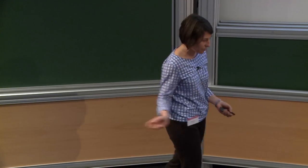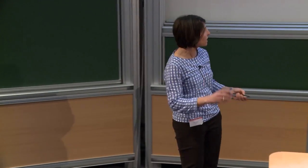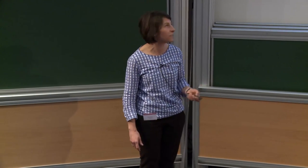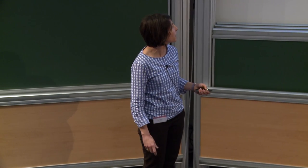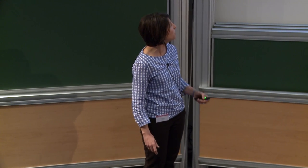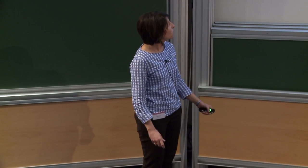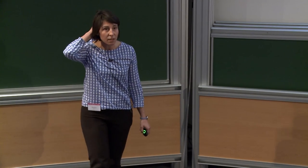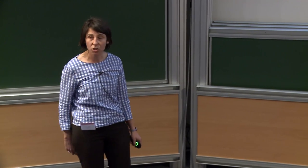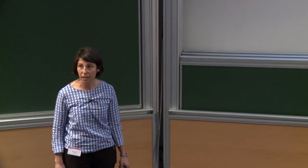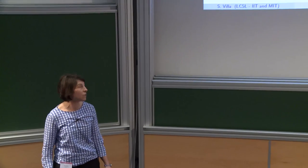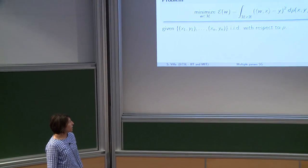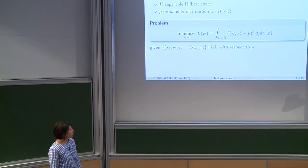In practice, very often other heuristics are used, such as multiple passes over the data combined with early stopping. What I'm going to present today are some theoretical results about these heuristics, and in particular the generalization properties of such variants of SGD. I will call it randomly stochastic gradient method, or SGM/SGD. I start from the problem setting: we consider linear regression in an abstract Hilbert space with the square loss.